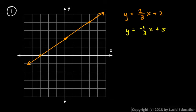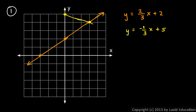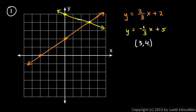And then the other line: y equals negative one-third x plus five. So it has a y-intercept of five and a slope of negative one-third. So we go down one over three, and it looks like we've found our point of intersection right there. Let's go ahead and draw in the line. The solution appears to be x equals three, y equals four — so three comma four.